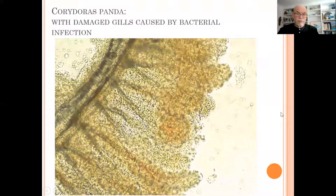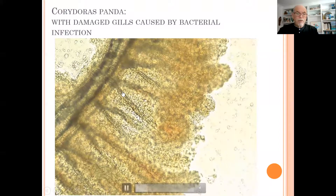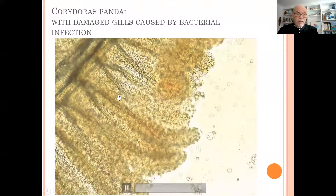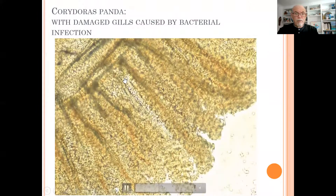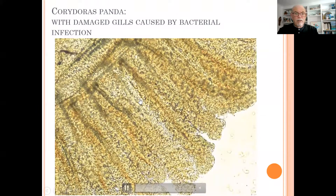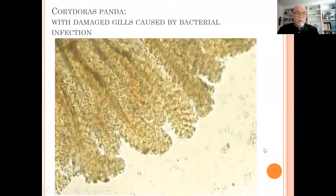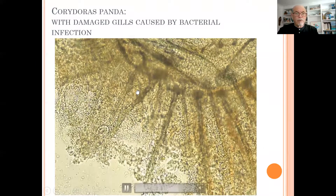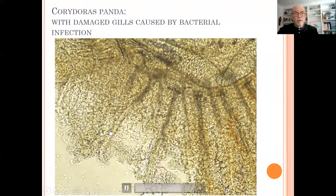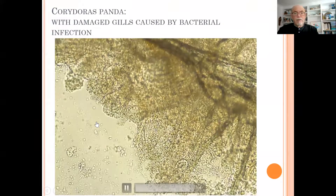Also the gills were damaged. You can see here the gill lamellae are rotten away. Here too, the gill lamellae are gone — a necrosis, eaten away by bacteria. All those gill filaments and lamellae are gone.